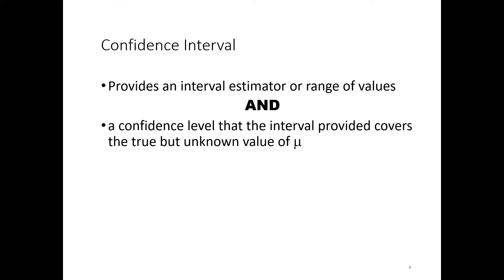A 95% confidence level — which you've seen in your first stats class — is a very popular one. It just means that we're 95% confident that the true mean will lie between this value on the low end and this value on the high end. And there's our confidence interval: it gives us a range of values and some guidance as to how confident we are that our actual estimate falls within that range.